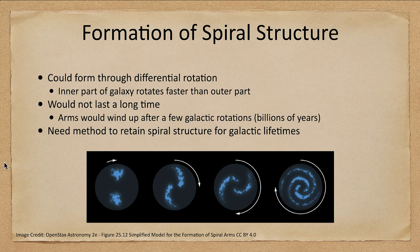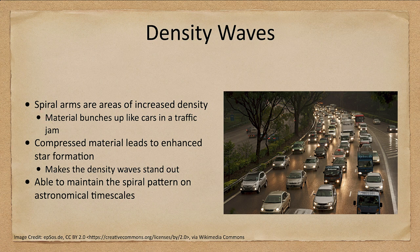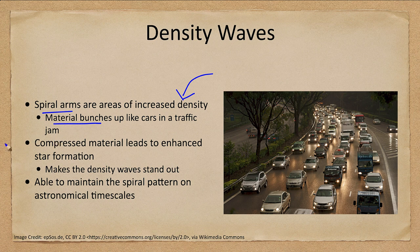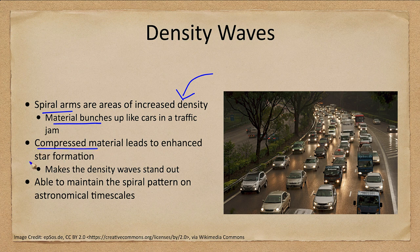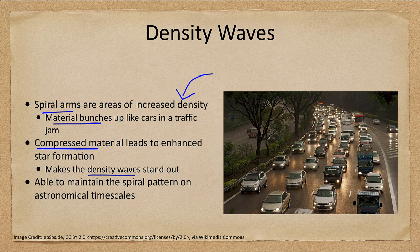And what we believe does this is what we call density waves. The spiral arms are actually areas of increased density. There's more density of material in them and the material bunches up much like cars in a traffic jam. This compression leads to enhanced star formation and makes the density waves stand out.